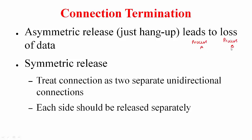Suppose process A is talking with process B and process A thinks it is done, so it is going to issue the close call. This asymmetric release means you are now going to just shut down the socket, thereby preventing not only sending of the data but also receiving of the data from the other end.